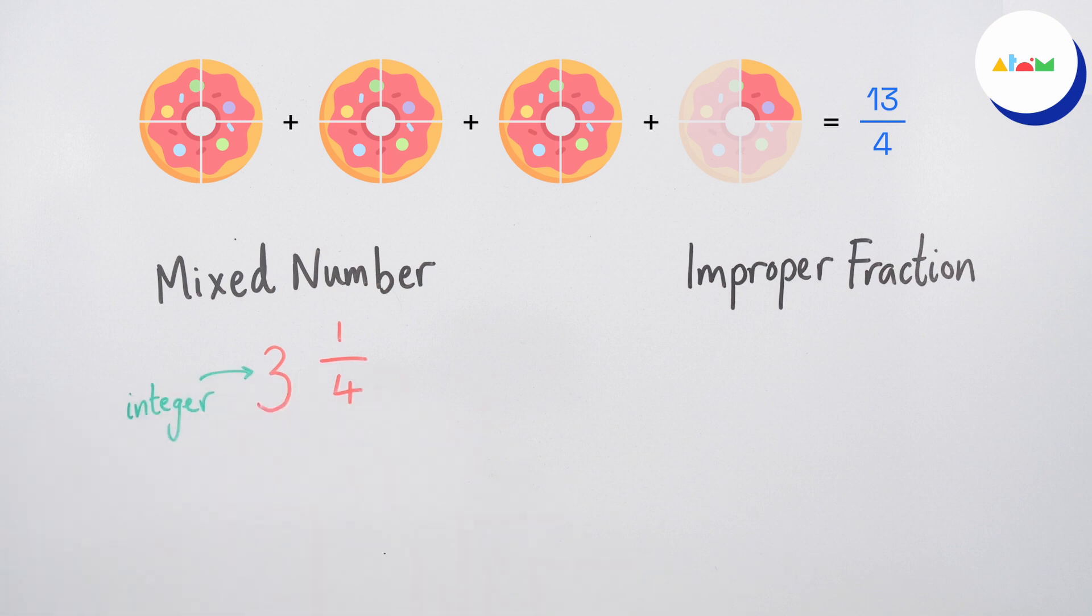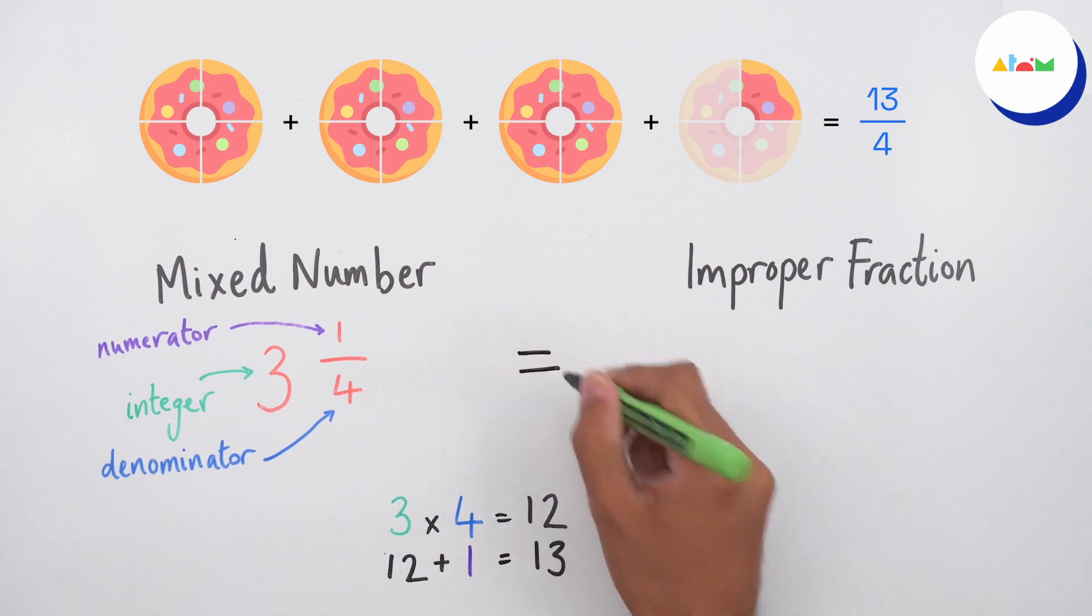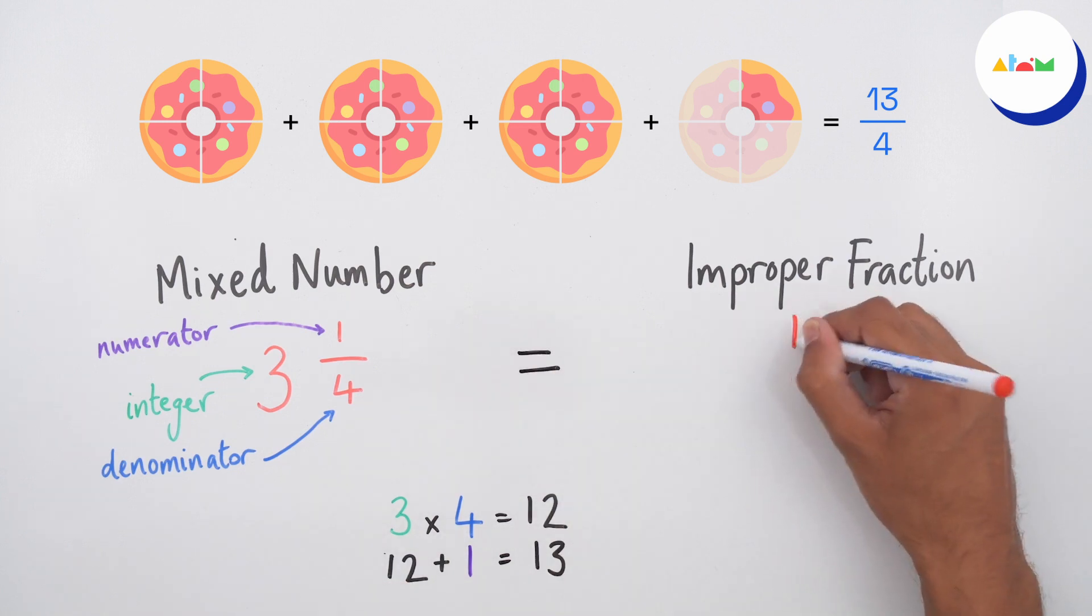We can also work this out by multiplying the integer, three, from the mixed number by the denominator, four, and then adding the numerator of the original fraction. Three times four equals twelve, and twelve plus one equals thirteen. The mixed number three and one quarter is equal to the improper fraction thirteen quarters.